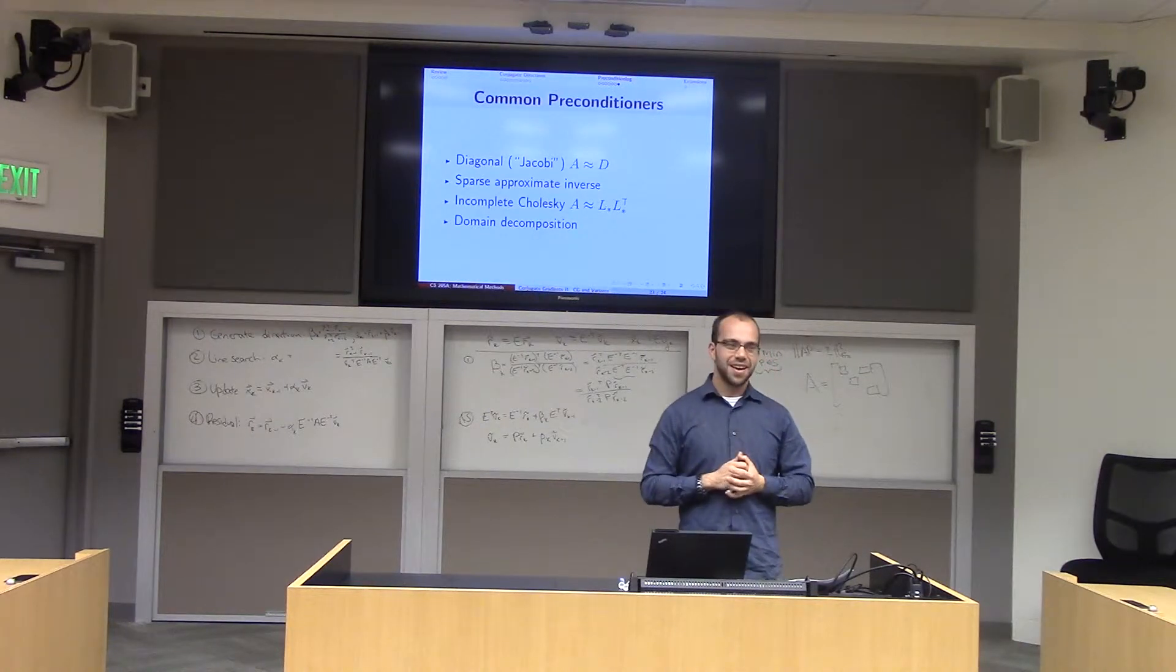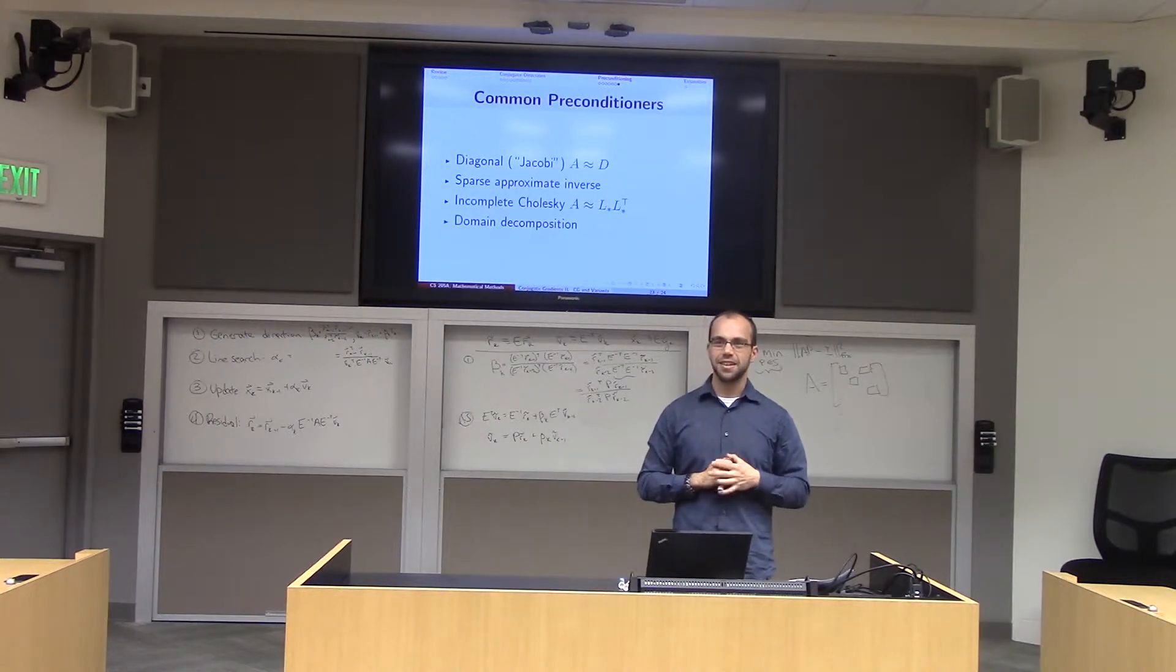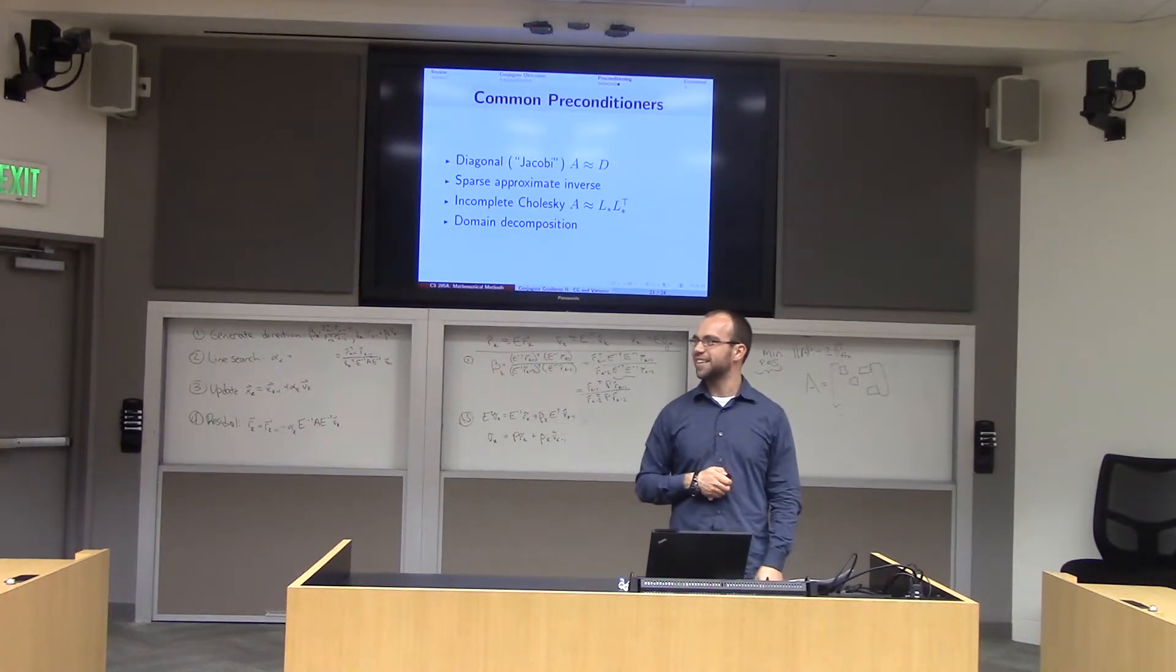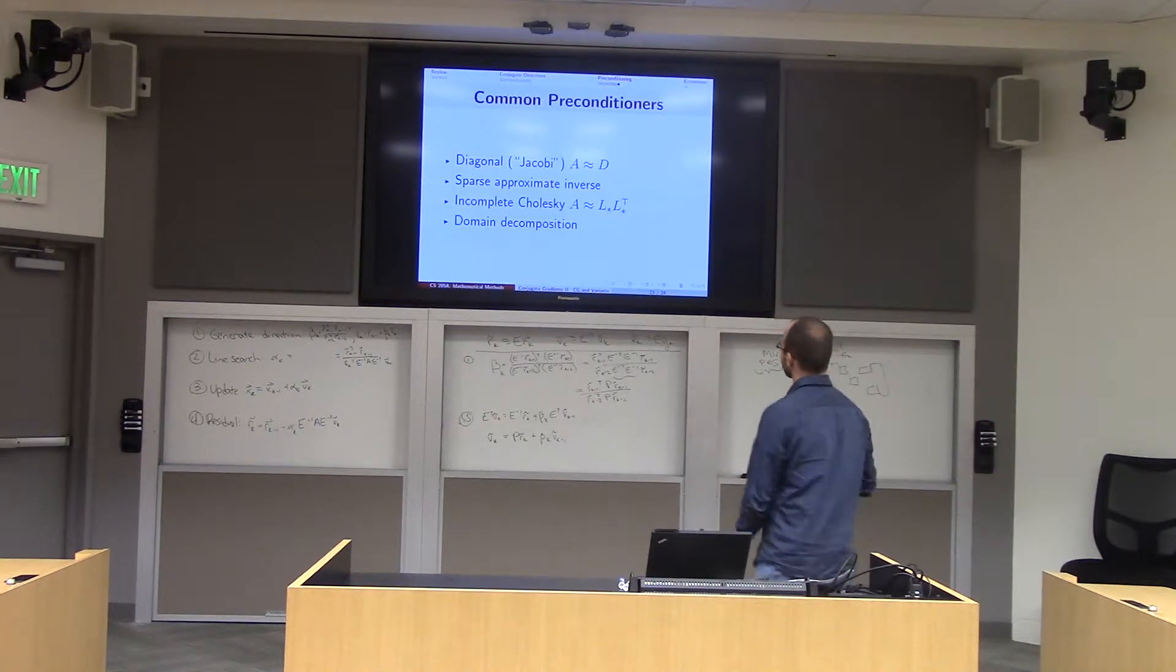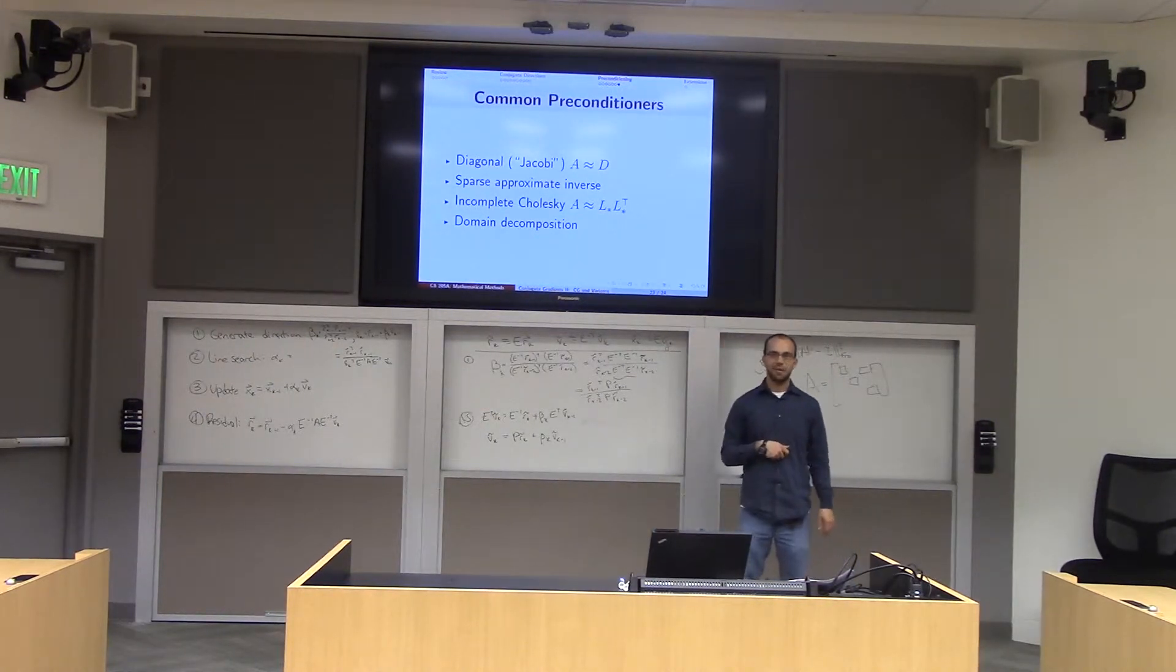Then what you're going to do is any time that I would induce fill, like I would have to put a non-zero value into my Cholesky factorization, I'm just not going to write it down. And then I'm just going to happily keep marching along and pretend like I had done the right thing in Cholesky factorization. This is called the incomplete Cholesky factorization. It is an engineering marvel.